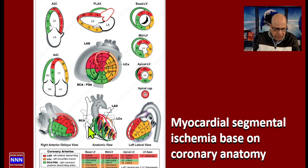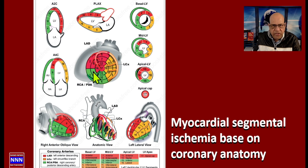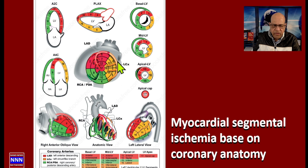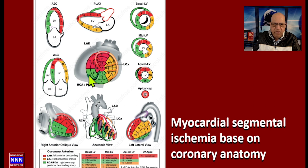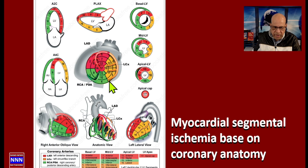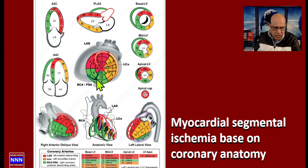The right coronary artery supplies the right ventricular branches and also the posterior descending artery, which predominantly supplies the inferior wall and the inferoseptal region of the left ventricle. So we have three major branches: the LAD supplying the anteroseptal region, the circumflex supplying the anterolateral and infralateral walls, and the RCA supplying the inferoseptal and inferior wall. The posterior wall is supplied in 85% of cases by the circumflex marginal branches, and in a small percentage by the posterolateral branch of the right coronary artery.